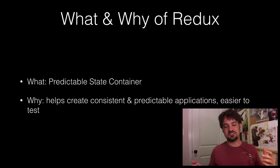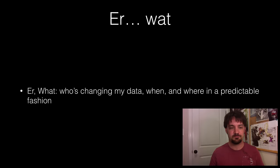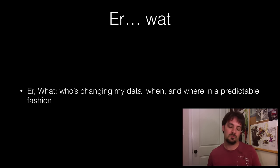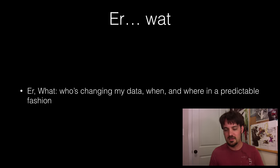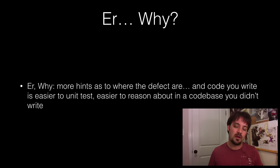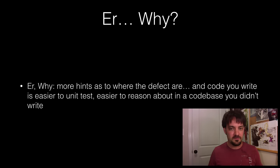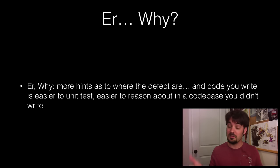Redux — what is it? It is a predictable state container. It helps you create consistent and predictable applications that are supposed to be easier to test and easier to debug. What does that really mean? It really means who's changing my data, when, and where, in some kind of predictable fashion. I know who's changing my data — not classes everywhere, functions everywhere, some random file somewhere else. Functional programming and Redux don't solve all your problems. You still need unit tests. You're still going to write code that throws no errors and something doesn't work.